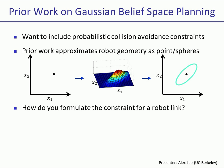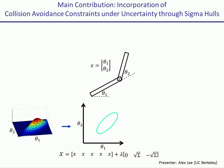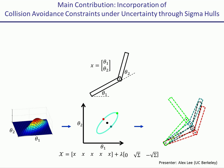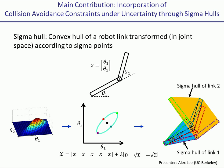Now consider a two degrees of freedom articulated planar arm, where its state is given by its two joint angles. Its belief state is described by a Gaussian distribution. Consider the sigma points of the mean — each sigma point gives a respective robot configuration. The convex hull of the second link for the five robot configurations given by the five sigma points is what we call the sigma hull of the first link. Similarly, the convex hull of the second link for the five configurations is the sigma hull for the second link. So we define the sigma hull as the convex hull of a robot link transformed according to the sigma points.